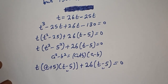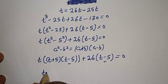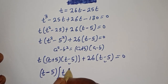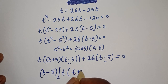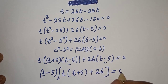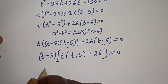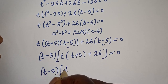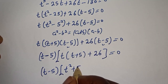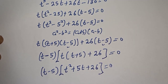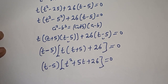t minus 5 is common throughout. Bringing it out: t minus 5 bracket t bracket t plus 5 plus 26, equals 0, which simplifies to t minus 5 bracket t squared plus 5t plus 26 equals 0.